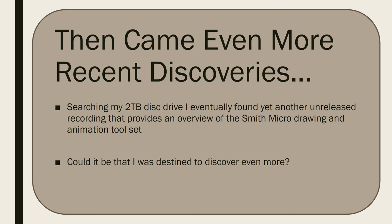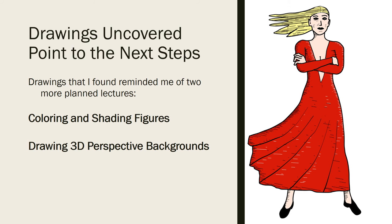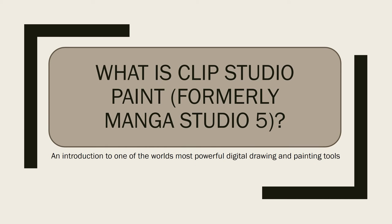I finally had enough to maybe consider a Udemy course, but I still felt that something was missing. I searched my two terabytes of disk space and eventually found another recording — an overview of the Smith Micro drawing and animation tools, of which Clip Studio Paint is one — and I threw that in. It turned out there was even more to discover. I found I had gone through the coloring and shading process for a figure on my disk drive, plus I was planning a lecture on 3D perspective backgrounds. Clip Studio Paint is amazing at doing 3D perspective drawings extremely easily.